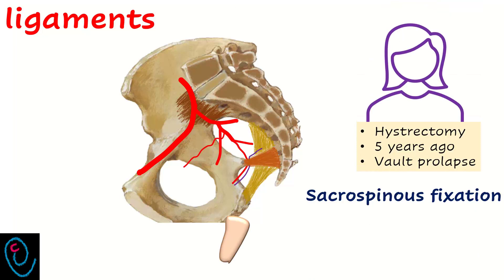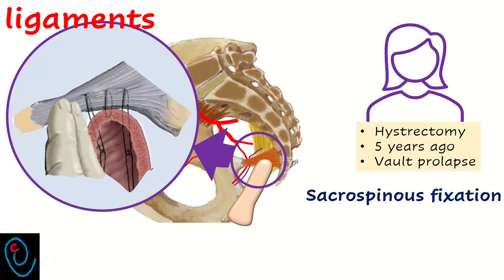Sacrospinous fixation is another operation described for the management of vault prolapse. During sacrospinous fixation, the prolapsed vault is sutured to the sacrospinous ligament. Sutures are placed approximately two finger-breadths — about 2-3 cm from the ischial spine — which roughly corresponds to the mid-portion of the ligament, to avoid injury to the artery and nerve.